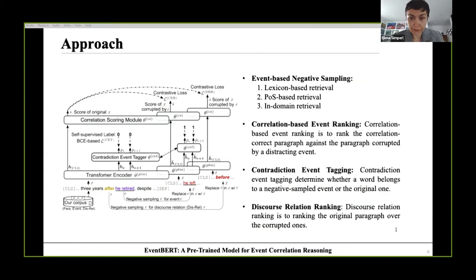Based on our training example and corresponding negative samples, we propose the first self-supervised contrastive learning objective, named correlation-based event ranking, to rank the correlation-correct paragraph against the paragraph corrupted by a distracting event. Moreover, we take a step closer to the corrupted paragraph and determine whether a word belongs to a negative sampled event or the original one. Therefore, we define another self-supervised learning objective based on contrastive examples, called contradiction event tagging, to build a binary classifier at word level.